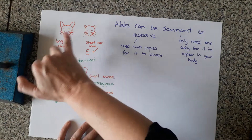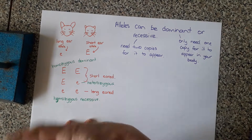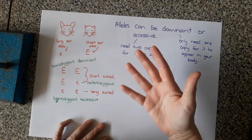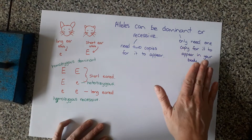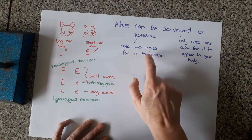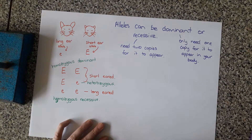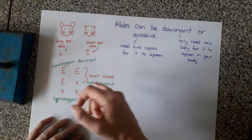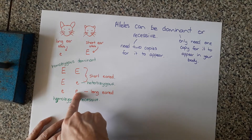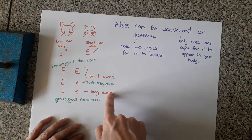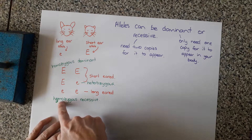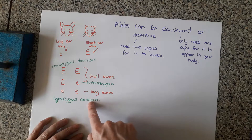I'm going to call the short ear allele capital E. The long ear allele is recessive. The science idea behind dominant and recessive is that if an allele is dominant you only need one copy of it for it to appear in your body, but if it's recessive you need two. So for a creature to have long ears, it must have two copies of the little e allele — in fancy science words, it is homozygous recessive: homo meaning same, so same allele, recessive.